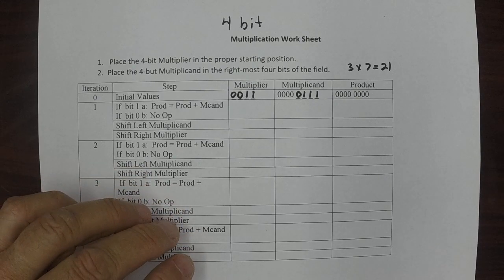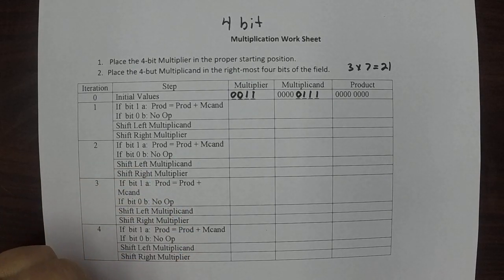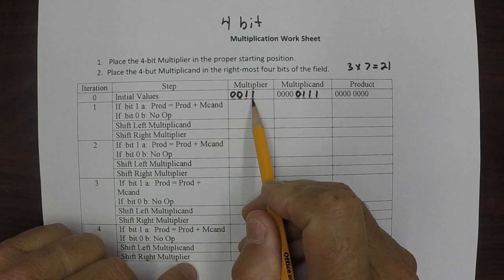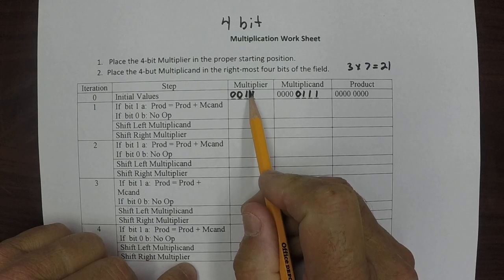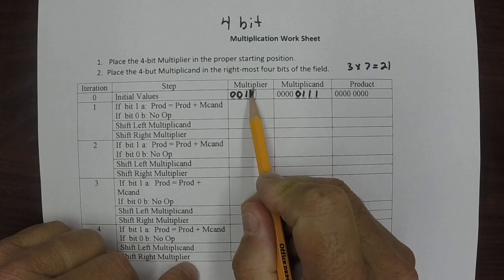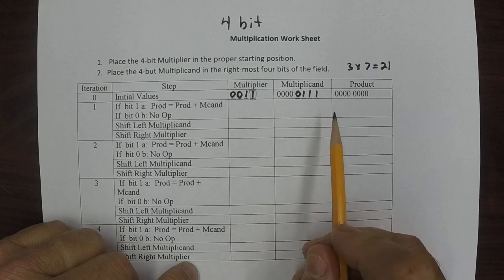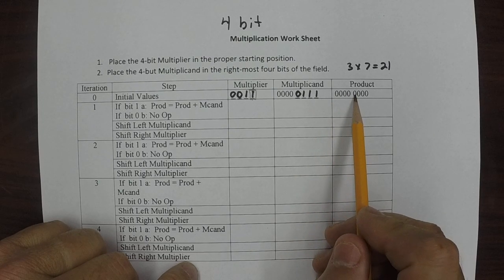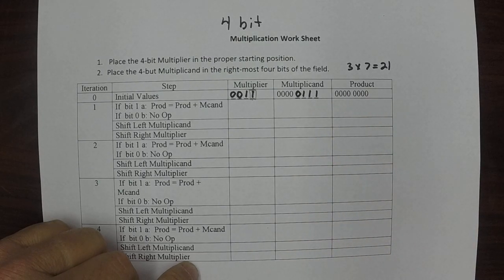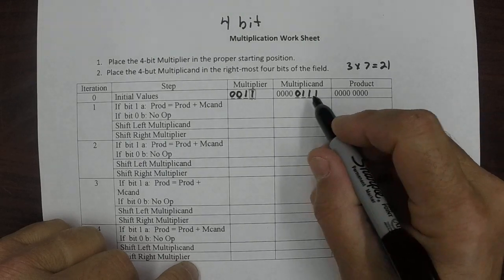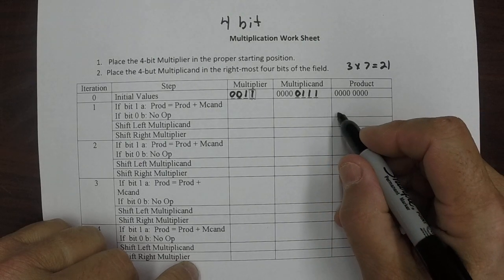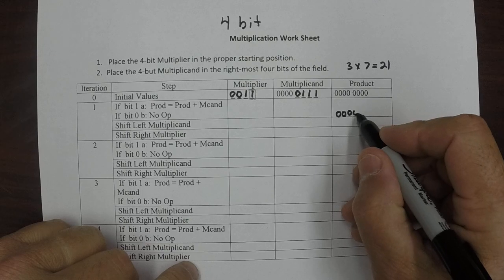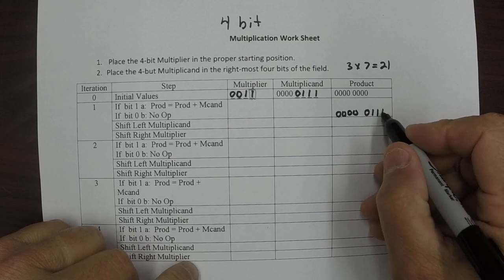Now here's the process we're going to go through. The very first thing to do is we examine the rightmost bit in the multiplier. If that bit is a 1, what we do is we take the multiplicand and add it to the product. So we're going to do that — adding this to zeros, which is just that product. So it's 0, 1, 1, 1.